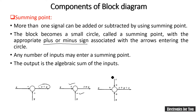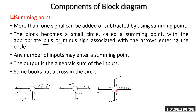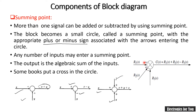It is not compulsory that the summing point always has two signals; it may consist of a number of input signals. For example, if x is positive, y is positive, and z is also positive, the resultant will be x plus y plus z. In some books, there may be a cross inside the circle. For example, if R1(s) and R2(s) are positive but R3(s) is negative, the resultant C(s) will be R1(s) plus R2(s) minus R3(s).